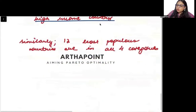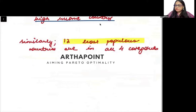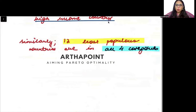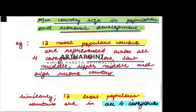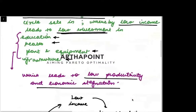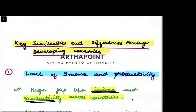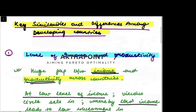Similarly, if we look at the 12 least populous countries, we see the same thing — they are divided across all four categories. So we can say there is no correlation between country size and economic development. That is the first key difference we wanted to discuss, which is on the basis of level of income and productivity.